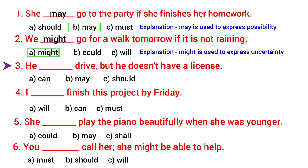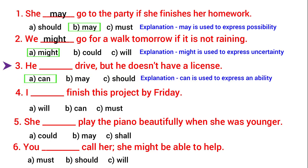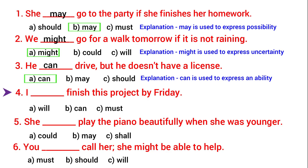Next: 'He blank drive, but he doesn't have a license.' Can, may, or should? We will use 'can' here, because 'can' is used to express an ability. So he can drive, but he doesn't have a license — he has that ability, right?